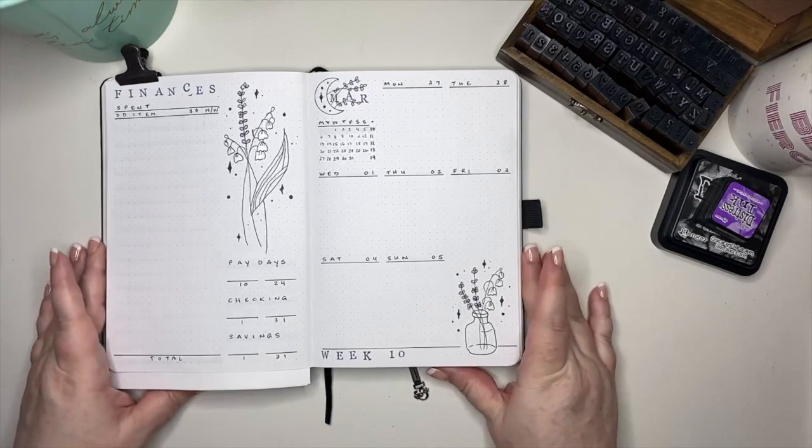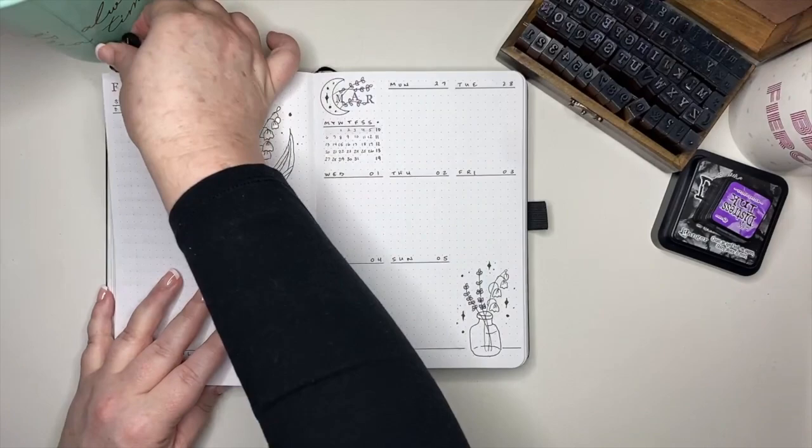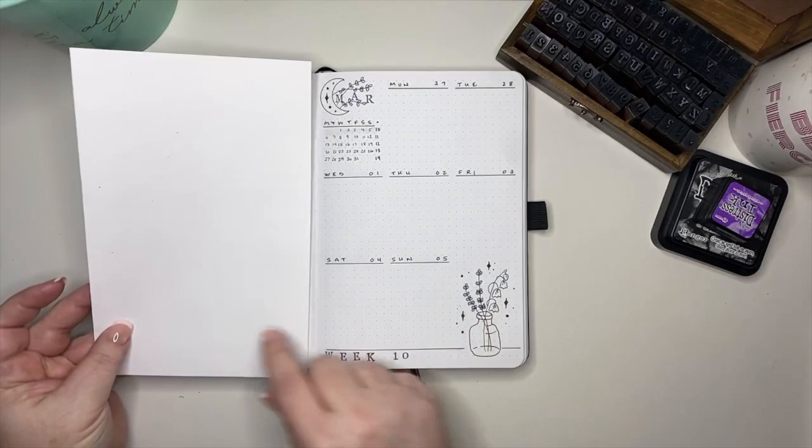We're going to move on and go ahead and set up two pretty identical spreads other than the doodles for both weeks 11 and 12 and then weeks 13 and 14 as well. And I don't know if you can see it, but as we move my scrap paper from one page to the other over here on the left, there is a little bit of purple paint and stuff starting to show up on that.